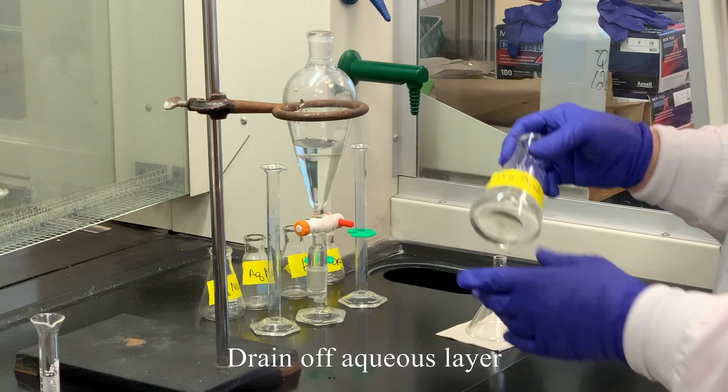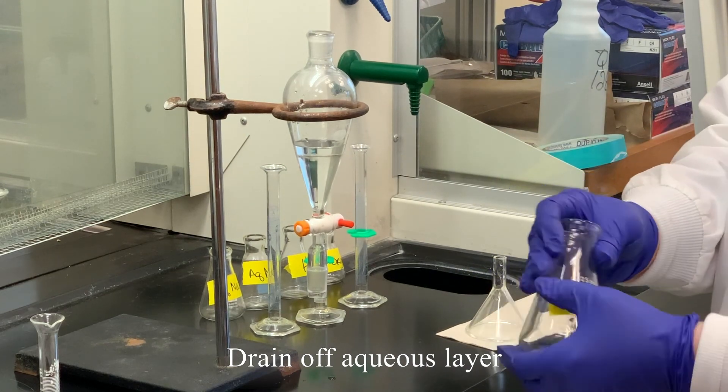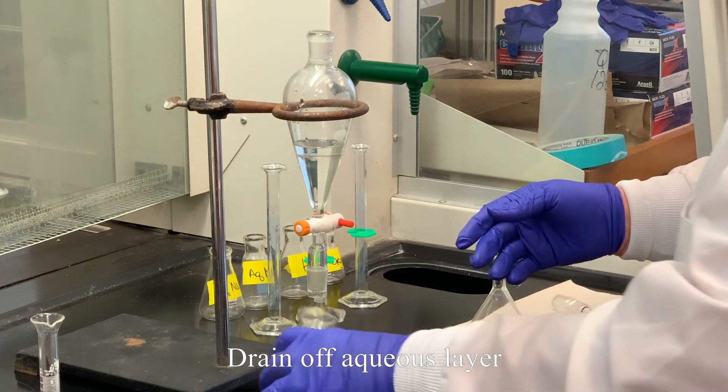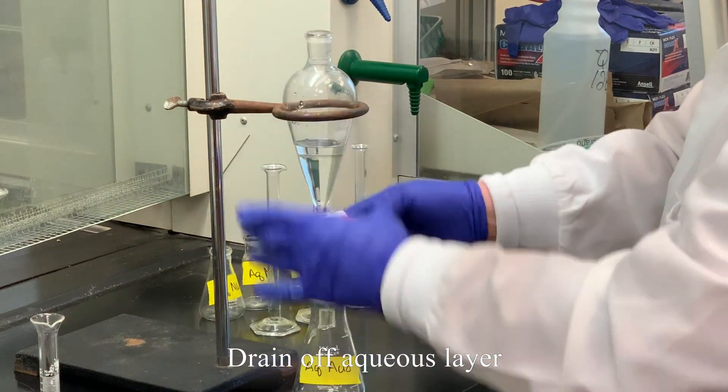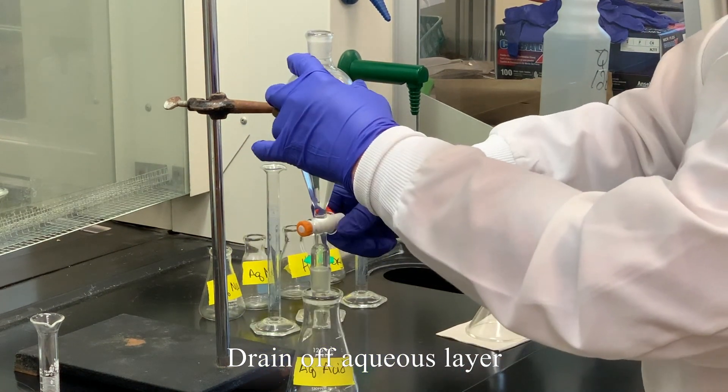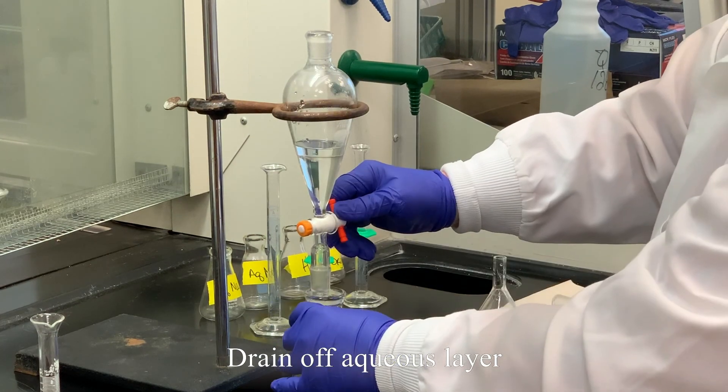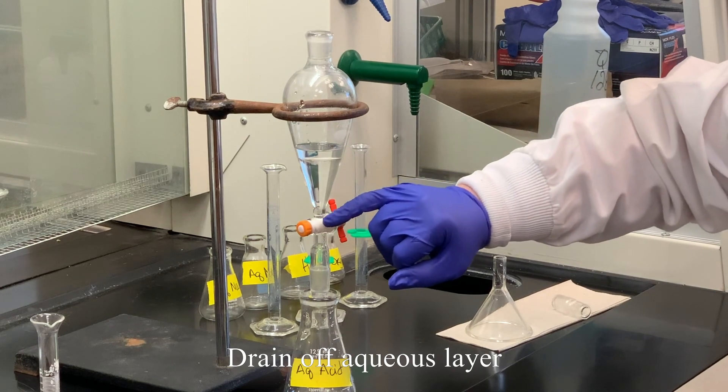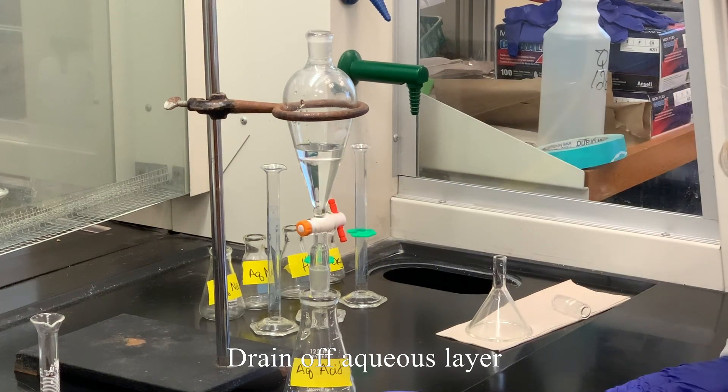So I can put my flask. I went ahead and labeled these flasks so there's no confusion. So this is the aqueous acid, which is this bottom layer. And then I'm going to drain this until the layer gets almost flushed with the white stopcock.